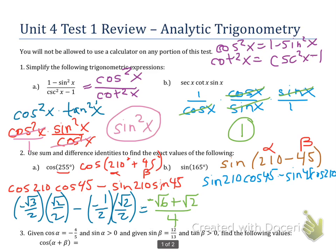So I'm going to replace sine of 210 with negative one-half. Cosine of 45 is square root of 2 over 2, minus the sine of 45 with square root of 2 over 2.